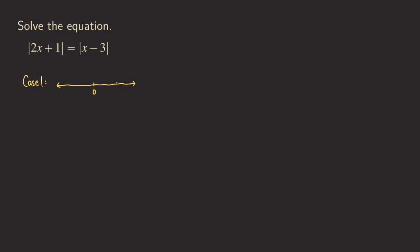Let's say two x plus one is a number at some point on the number line — we don't know what that value is yet. It tells us that the distance that two x plus one is away from zero is the same distance as when x minus three is away from zero. One possibility is that x minus three is also at the same spot, so they have the same distance away from zero — they're actually the same number. This is what Case 1 is about.